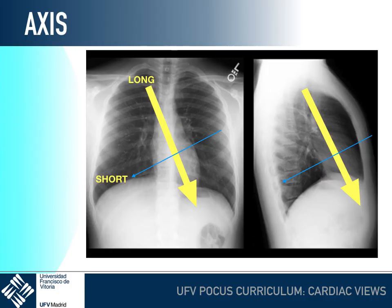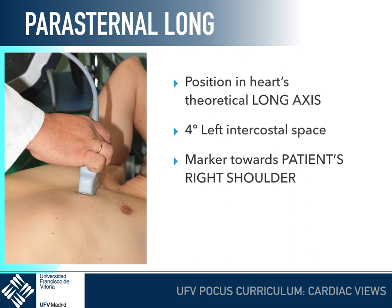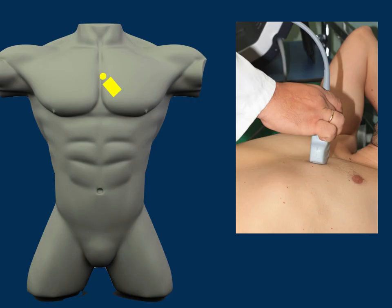The second window we are going to evaluate is the parasternal, and there are two different views in this window. Both are related to the axis of the heart. There is a long axis, which goes approximately from the patient's right shoulder to the left hip, and a short axis, which is totally perpendicular to the long axis. For the parasternal long axis, we place the probe in the theoretical long axis of the heart, pointing towards the right shoulder, evaluated in the fourth left intercostal space, with the probe perpendicular to the skin surface.